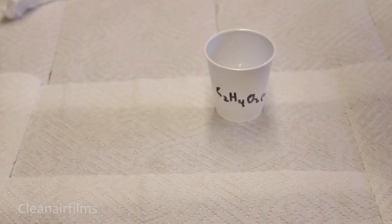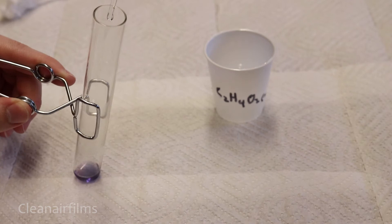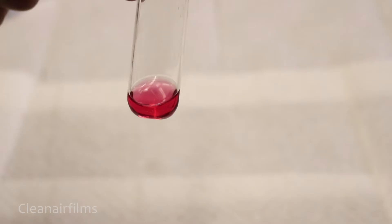Next, place some vinegar into each test tube. The liquid should turn bright pink. This color indicates an acidic pH.